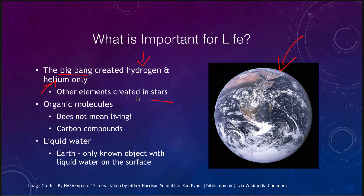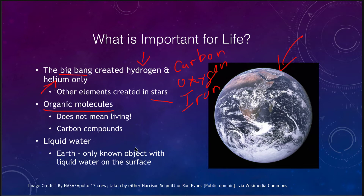We need other heavier elements. We need things like carbon, oxygen, and other elements — things like iron that make up our blood. Those all had to have been created in stars. We also want to qualify what we mean by organic molecules. An organic molecule does not mean that it is living. It simply means that it is a carbon compound, and carbon forms some very complex compounds, giving rise to its own chemistry.